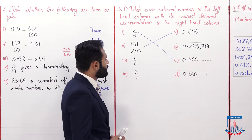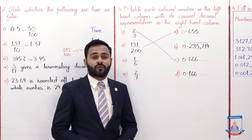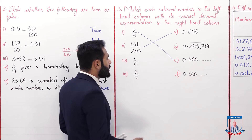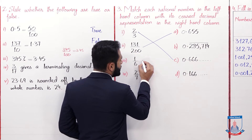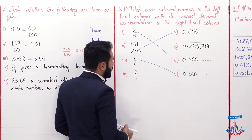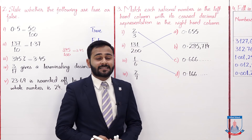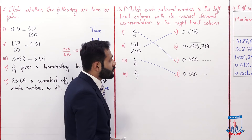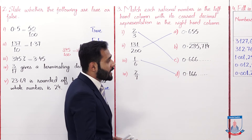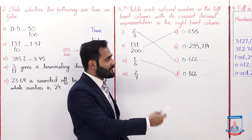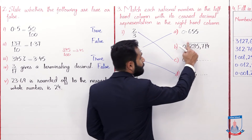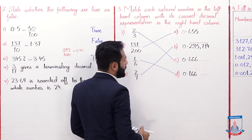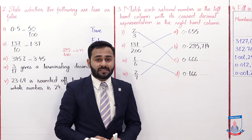The third is 1/6. Solving 1/6 gives 0.1666... and so on, so the third is equivalent to D. The fourth is 2/7. Solving 2/7 gives 0.285714 and then repeating 285714, that's why a bar is drawn over it. The fourth is equivalent to B.